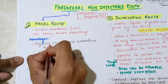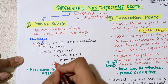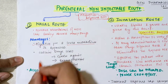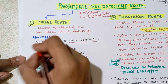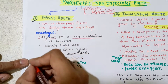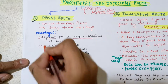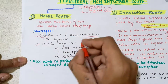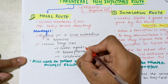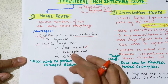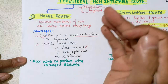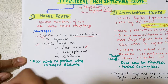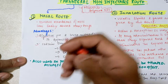Now let's discuss the advantages of the nasal route. We will be bypassing the digestive pH — the GI pH that can degrade some drugs — and we will also be bypassing first pass metabolism by the liver. However, we can only give certain specific drugs through this route, not every drug. One example is GnRH agonists, which suppress ovulation and decrease the levels of estrogens and progestins in females.